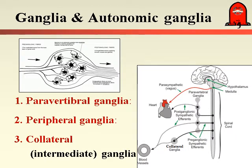There are centers within the central nervous system related to the autonomic nervous system, and we have ganglia — a collection of nerve cells present outside the central nervous system. These ganglia are of three types: paravertebral ganglia, peripheral ganglia, and collateral ganglia. Paravertebral ganglia are present near the vertebral column; peripheral ganglia are present at or near the organ; and the intermediate or collateral ganglia are present between the two.